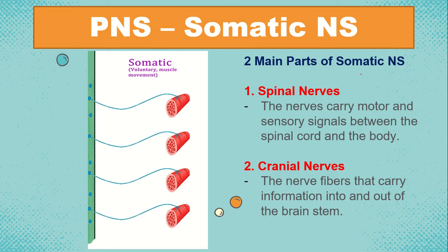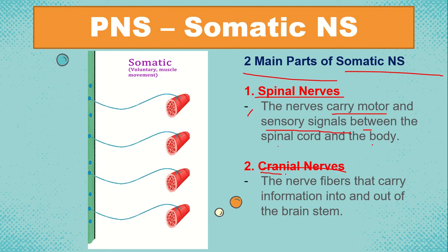The somatic nervous system has two main parts: spinal nerves and cranial nerves. Spinal nerves carry motor and sensory signals between the spinal cord and the body. Cranial nerves are located in our cranium or brain — they are nerve fibers that carry information into and out of the brainstem. For example, when you pick something up, the cranial nerves dictate that action to your muscles.